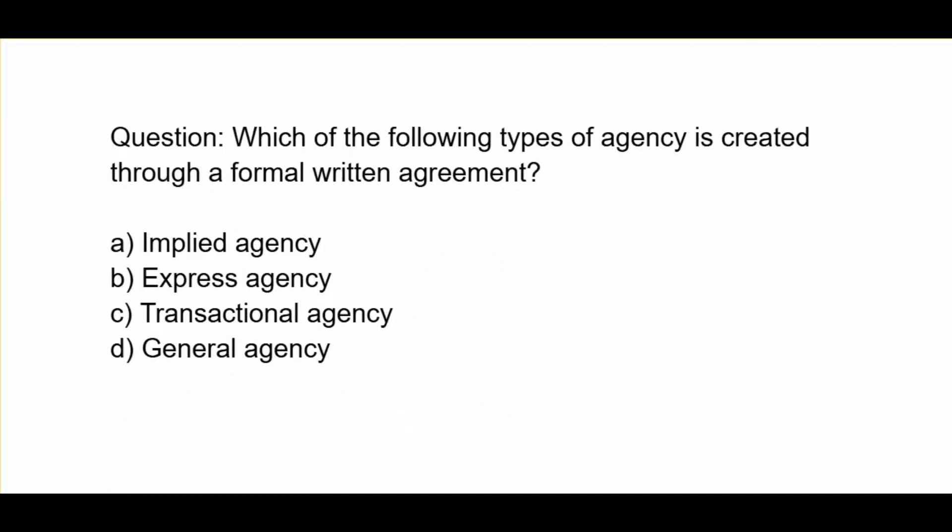Which of the following types of agency is created through a formal written agreement? A. Implied agency. B. Express agency.